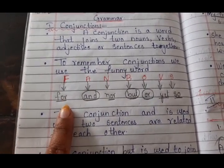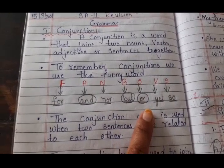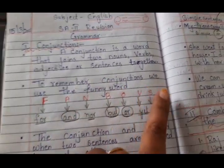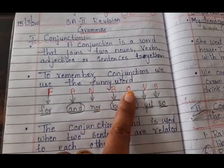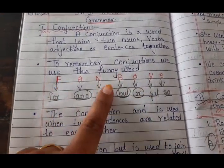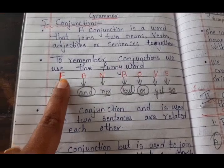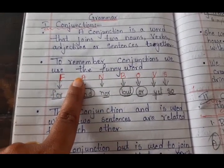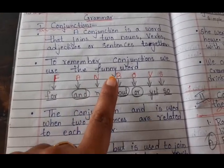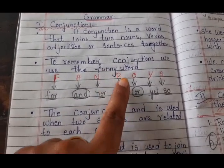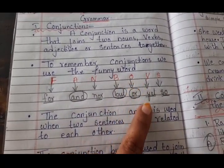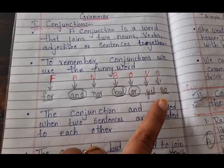But there are some other words also. To remember conjunctions we use the funny word FANBOYS. FANBOYS means: F means For, A means And, N means Nor, B means But, O means Or, Y means Yet, S means So.